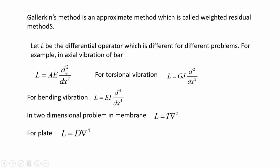It is not necessary that the sectional and material properties need to be taken as uniform. For torsional vibration of the bar, the differential operator L is GJ d²/dx², where GJ is the torsional rigidity — G is the shear modulus and J is the torsional constant. For bending vibration, L is EI d⁴/dx⁴.